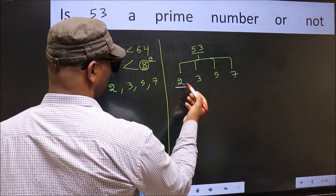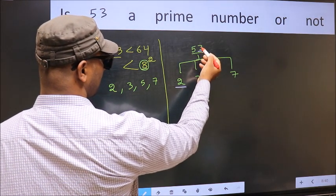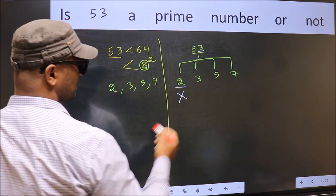Starting with 2. Last digit is 3, which is not even. So, this is not divisible by 2.